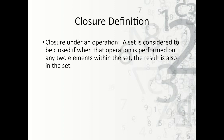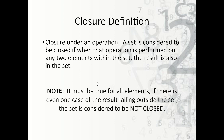Now, the closure definition: what does closure mean? Closure under an operation means a set is considered closed if, when that operation is performed on any two elements within the set, the result is also in the set. Importantly, this must be true for all elements. If there is even one case where the result falls outside the set, then it is considered not closed.